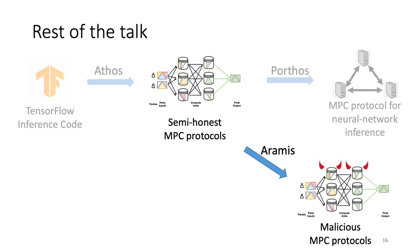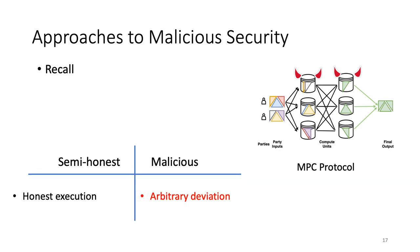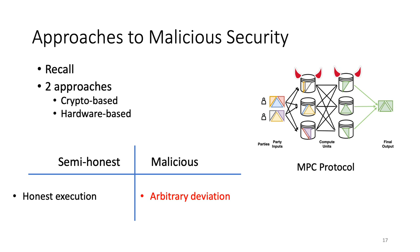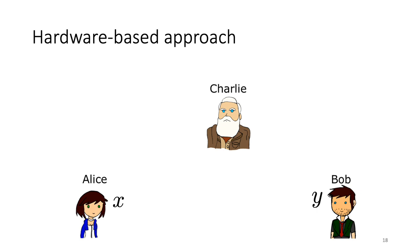Now let's talk about RMS. MPC protocols can have two levels of security: semi-honest security, where participants follow the protocol honestly, or the stronger malicious security, where participants can arbitrarily deviate. Approaches to malicious security can be divided into crypto-based or hardware-based. Crypto-based approaches achieve reasonable performance for semi-honest security, but generic techniques for malicious security have very large overhead. In the hardware-based approach, consider Alice and Bob with inputs x and y wanting to compute function f, with a third user Charlie who has support for secure hardware like Intel SGX.